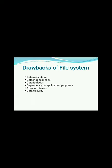The next drawback is Data Inconsistency. Data redundancy leads to data inconsistency. For example, if a student is enrolled for two courses and the student address is stored twice, and the student requests to change their address — if the address is changed in one place and not all records, this can lead to data inconsistency. Next is Data Isolation — because data is scattered in various files and files may be in different formats, writing new application programs to retrieve the appropriate data is difficult.